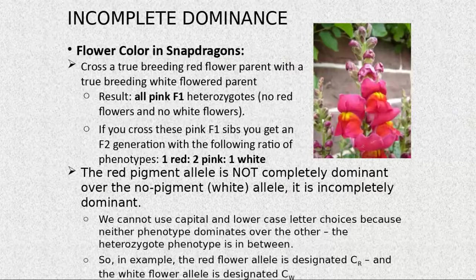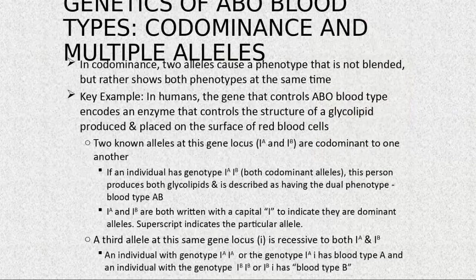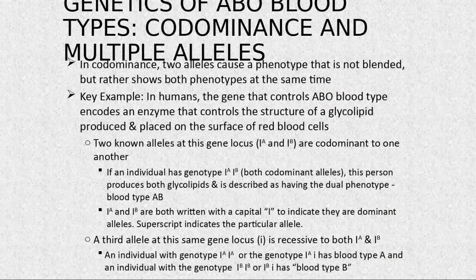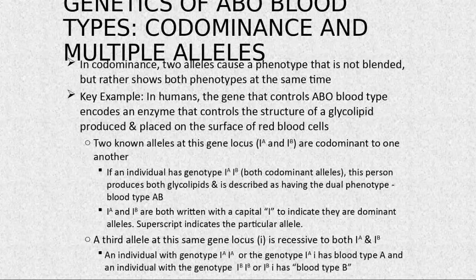In codominance, two alleles cause a phenotype that is not blended — rather, both phenotypes are shown in the same individual simultaneously. You see this in the genes that control ABO blood type, which encode an enzyme controlling the structure of glycolipids.